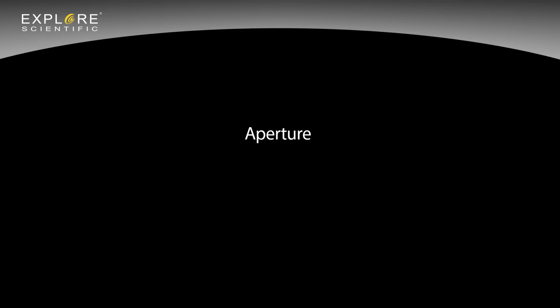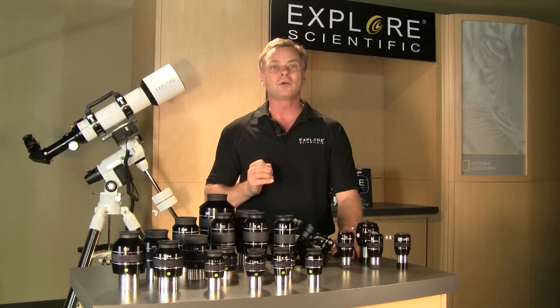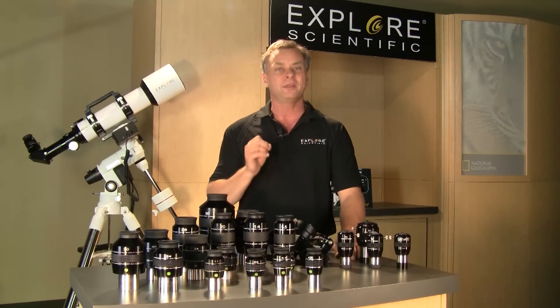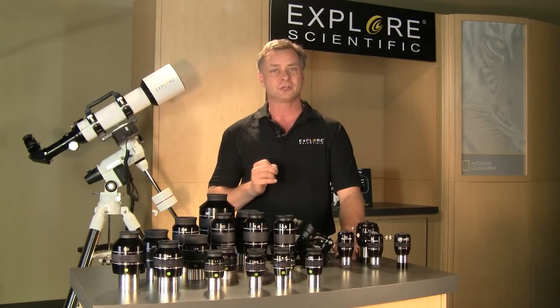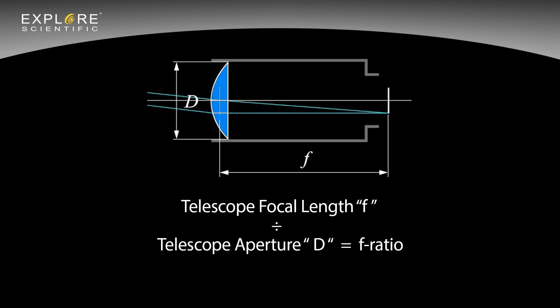This is how a telescope works: aperture, focal length, f-ratio. The telescope focal length divided by the telescope aperture equals f-ratio. From here we can determine magnification and true fields of view.